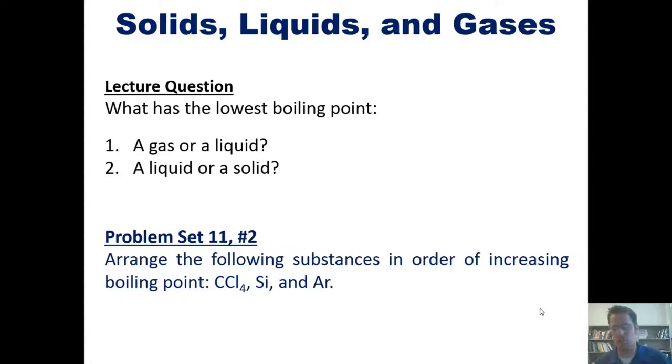The one that's a gas normally under standard temperature and pressure is the one that's going to have the lowest boiling point. It's already a gas. And the one that's a liquid is going to be in between. So what you really need to do is determine what the natural physical state is of each of these substances at standard temperature and pressure.